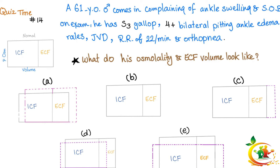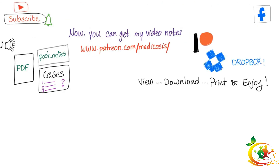On physical exam he has an S3 gallop rhythm, 4+ bilateral pitting ankle edema, raised jugular venous distension, respiratory rate of 22, and orthopnea. What do his osmolality and ECF look like? Here are the normal values and five choices — let me know the answer in the comments; you'll find the answer in the next video. Thank you for watching, don't forget to subscribe, and you can support this channel on Patreon. Until next time — be safe, stay happy, and study hard.